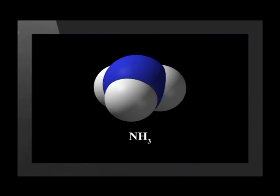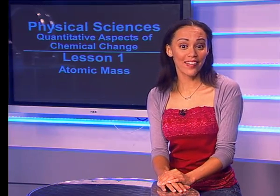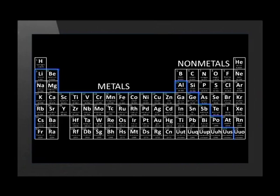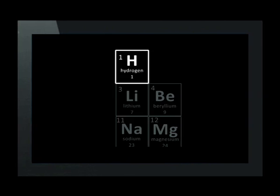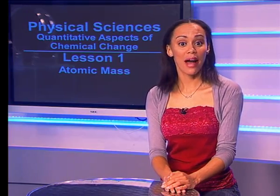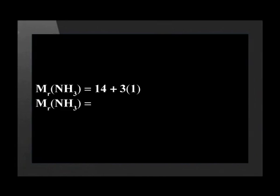Let's calculate the relative molecular mass of an ammonia molecule. We start by writing the symbol for relative molecular mass and then, in brackets, the formula for ammonia. Remember that the relative molecular mass is calculated by adding the individual relative atomic masses of the atoms in the compound. We find the relative atomic mass of nitrogen and hydrogen on the periodic table: nitrogen has a mass of 14 and hydrogen has a mass of 1. The sum of the masses is 14 plus 3 times 1, since there are 3 hydrogen atoms. That gives a relative molecular mass of 17.